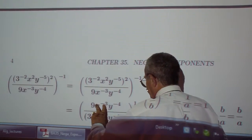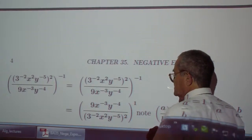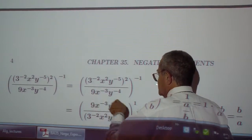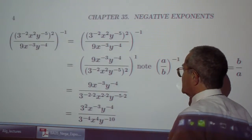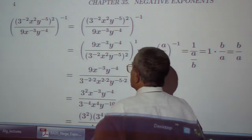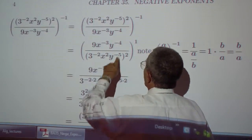So I'm writing the reciprocal of the fraction here and the exponent will be positive 1. Therefore this numerator is the denominator and this denominator is the numerator. And then I have no more exponent out here, I don't need it.